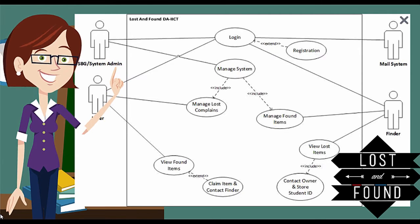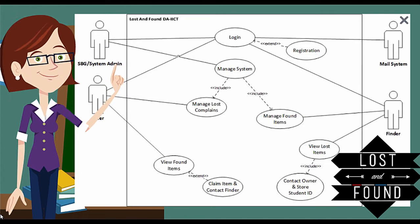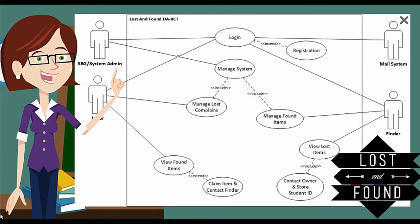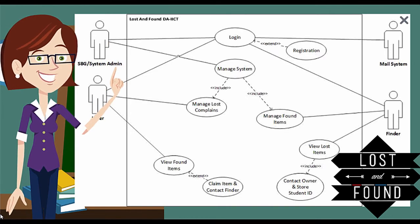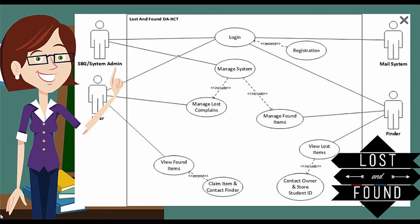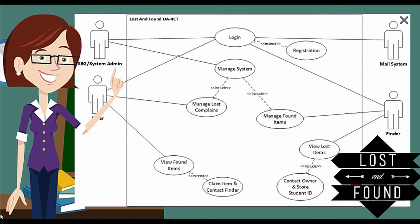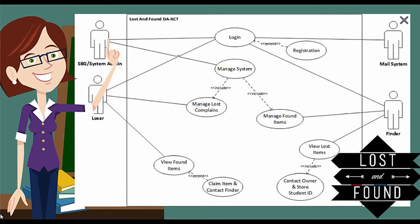The view found items use case: as a loser, I am going to see the list of found items to check whether someone has found my item. This use case extends to claim item and contact finder — since it is optional whether I claim an item or contact the finder, these are represented as extend relationships. You can claim an item or even contact someone, but both are completely optional.